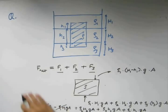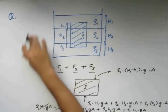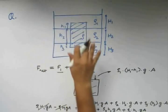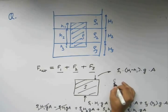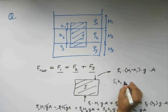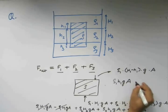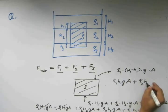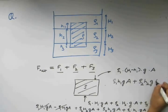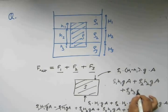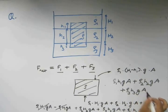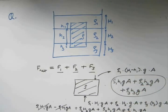So the net force due to these liquids will be this quantity. So we have rho1 into small h1 into G into A plus rho2 into small h2 into G into A plus rho3 into small h3 into G into A. This is going to be the net force applied on this body due to all these three liquids.